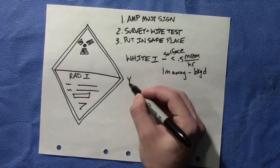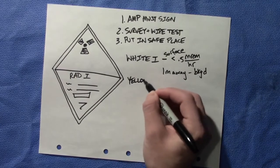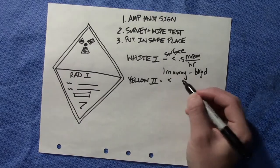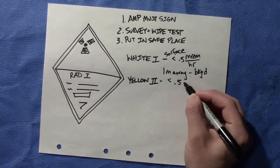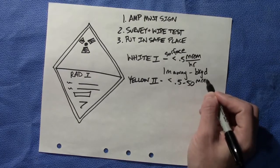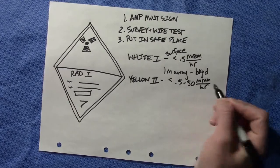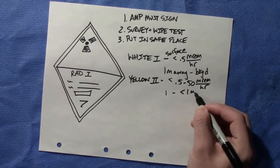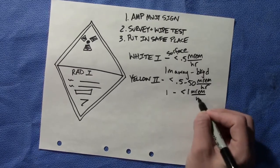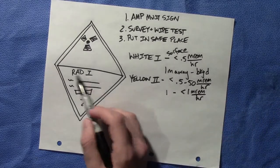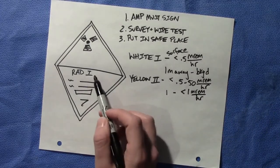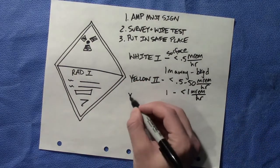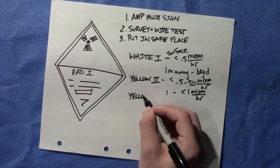Now we have Yellow II. That is the next step up. Yellow II surface shouldn't exceed 0.5 to 50 millirem per hour. And at one meter away, it should not exceed 1 millirem per hour. The only difference is we have a radioactive two for Yellow II, and the top of the diamond would be yellow.